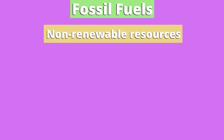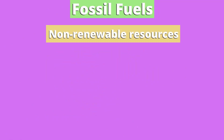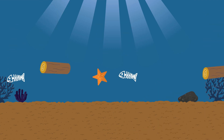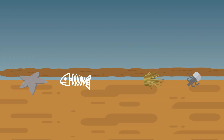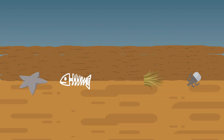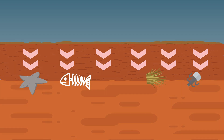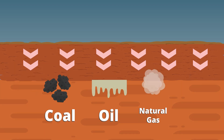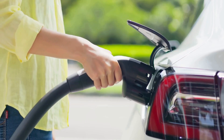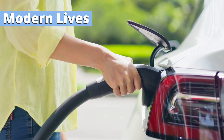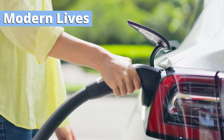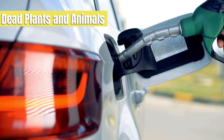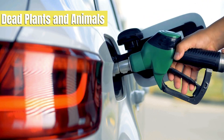Fossil fuels are non-renewable resources formed over many years from the remains of dead plants and animals. These ancient organisms sank to the bottom of oceans, swamps, and lakes where they were buried under layers of mud and sediments. Over time, the heat and pressure from these layers transformed the organic material into coal, oil, and natural gas. These fuels are essential to our modern lives, but understanding their origins helps us appreciate their value and the need to use them wisely. So how did these dead plants and animals turn into fuels we use every day? Let's explore the process that made it possible.